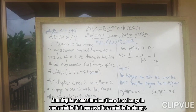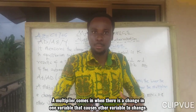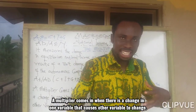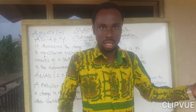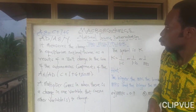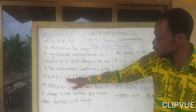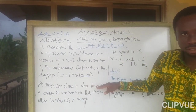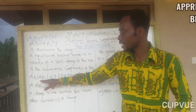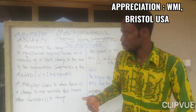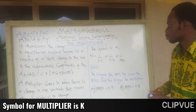The multiplier comes in when there is a change in one variable that causes other variables to change. So we only calculate the multiplier when there is a change in one autonomous component which is causing the aggregate expenditure or aggregate demand to also change.